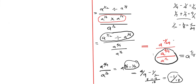Now we are left with a to the power negative one over 24 divided by a to the power negative one over 18. Let's simplify this to get the final solution.